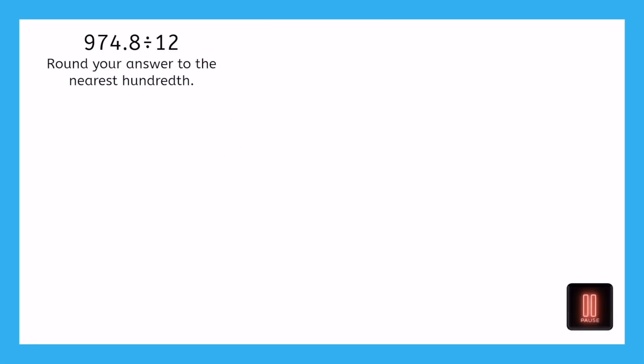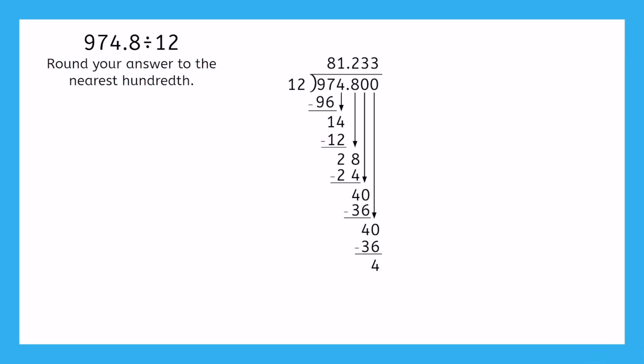Now that we have equivalent equations with a whole number divisor, we can divide. Pause here to solve, rounding your answer to the nearest hundredth. After completing the long division process, we're left with 81.233 repeating, which we can round to 81 and 23 hundredths. Remember, you can always pause if you'd like to compare your work to the work on the screen.